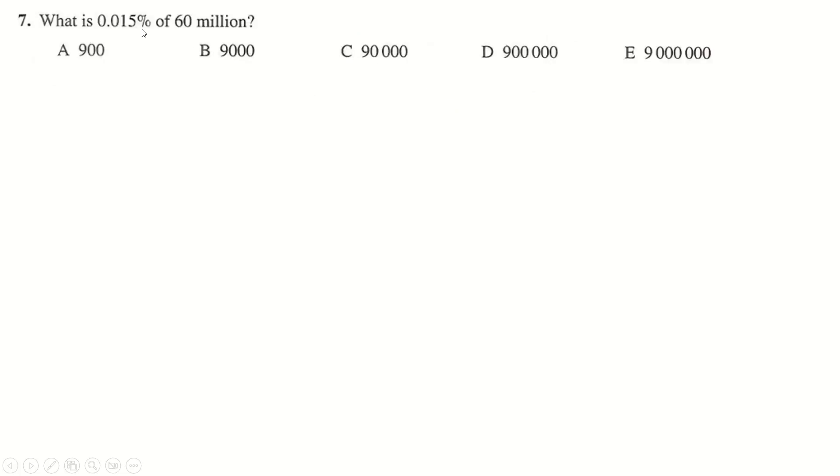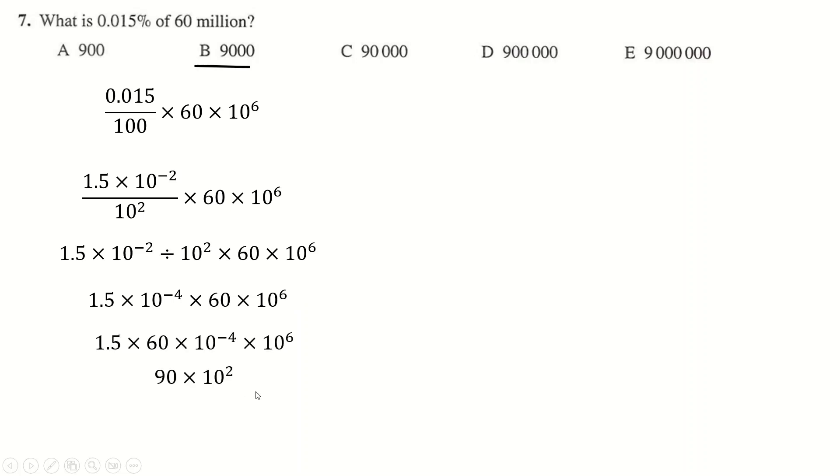Question number 7. A percentage means per 100, so we do this number over 100, and of means times. I've written 60 million as this. I just said that this here is times 10 to the minus 2, writing that in standard form. This is 10 to the 2, and then this is divide, so we take away. So it's minus 2, take away 2, to make this times 10 to the minus 4. Then we can just shift this around. 1.5 times 60 is 90, and this times this is 10 to the 2. So we get 9,000 in total.